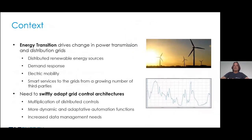This is motivated by the changing context we need to adapt to — the energy transition. We have to face the growth of renewable energy sources such as wind generation or photovoltaics. We also have to prepare for new uses that are growing, such as electric mobility. We expect more responsiveness from the consumer side to market signals or scarcity signals, and potentially more smart services from a growing number of third parties scattered over the network. In this context, we have to adapt our grid control architecture with a multiplication of distributed controls, and these automation systems will have to adapt to more diverse situations in a more dynamic manner.